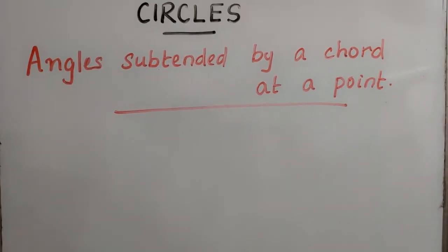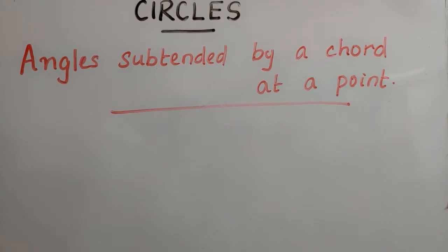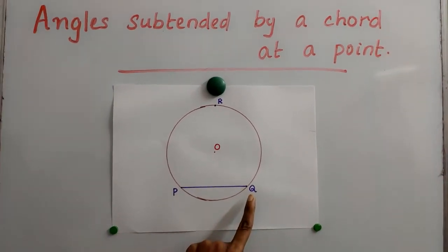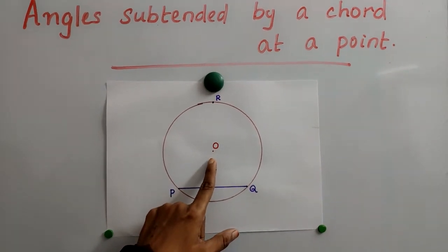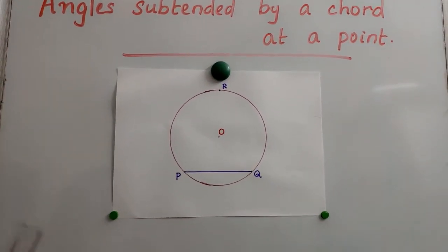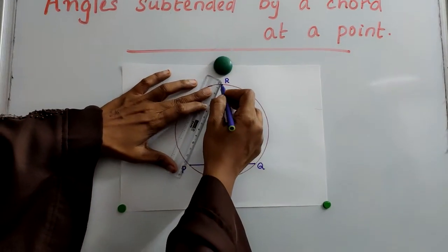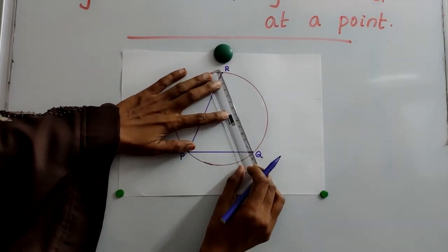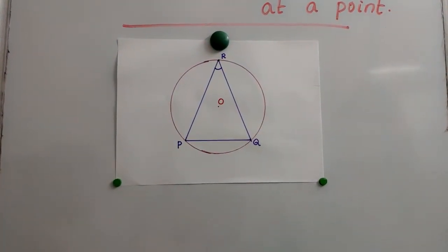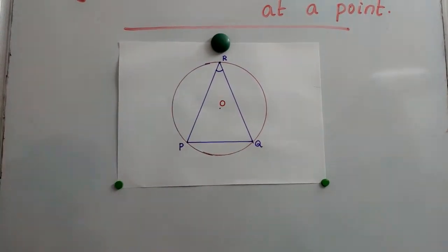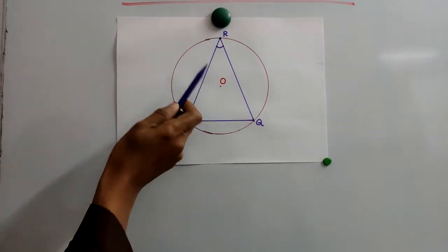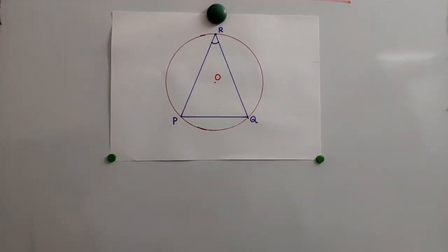Hi students, from my previous video you have learned the concept of circles. Here I drew a circle. PQ is the chord of the circle. O is the center of the circle, and R is any point on the circle. Angle PRQ is the angle subtended by the chord PQ at R. That is, PQ is the chord of the circle, R is a point on the circle, and angle PRQ is the inscribed angle.